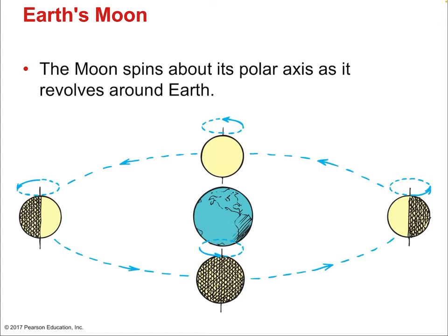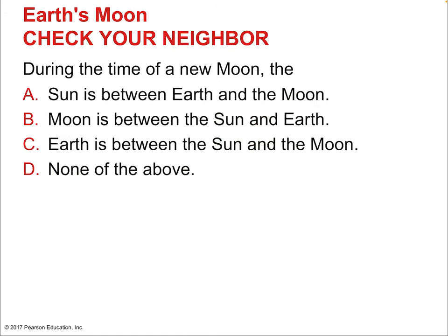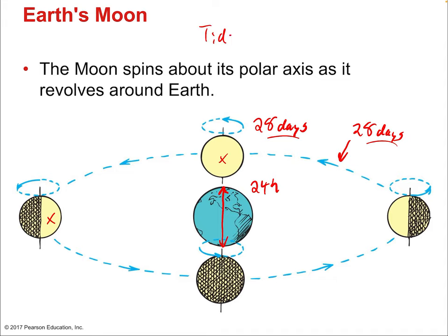The moon spins about its polar axis as it revolves around Earth. It takes about 28 days to make a full rotation and also 28 days to complete a full orbit. Since those two times are essentially the same, Earth always sees the same side of the moon — this is called a tidally locked orbit. The full moon rises when the sun sets and sets when the sun rises, exactly out of sync with the sun, while new moons are synchronized with the sun.